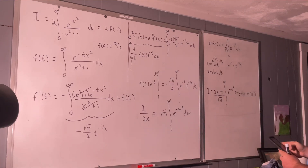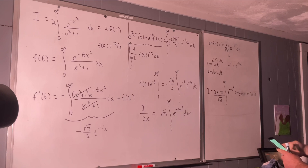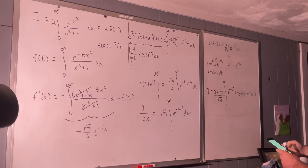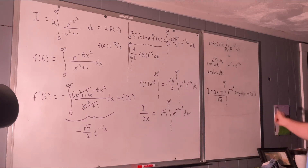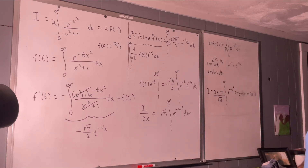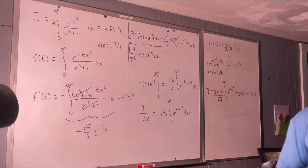I believe that's correct — let me check my notes. Yes: i equals pi times e times erfc of 1. Pretty nice little problem right there. Hope you enjoyed that, thank you.